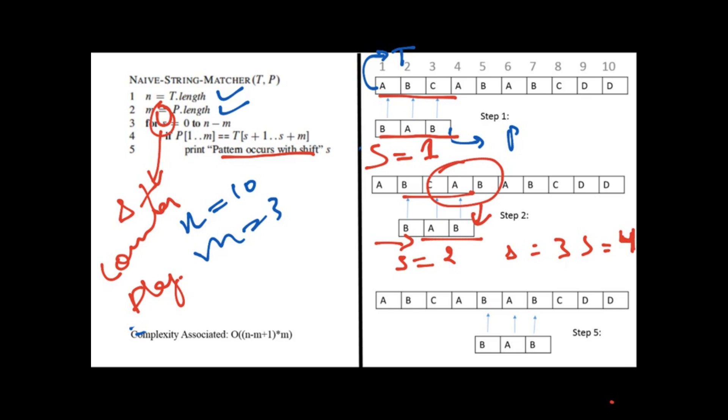After moving the shift ahead, we can see that it is ABA, which is not matching with the pattern. We will again move the shift to 5. And here we can see that BAB matches with the text BAB. So we can say that the pattern occurs at shift S. At shift S equal to 5, we have found the pattern.